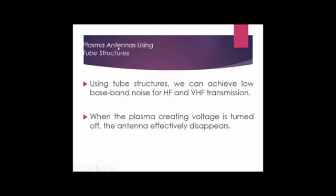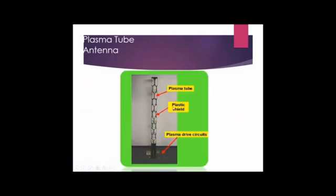Plasma antennas using tube structures can achieve low baseband noise for higher frequency and very high frequency transmission. When the plasma-creating voltage is turned off, the antenna effectively disappears. This plasma tube antenna consists of a plasma tube, a plasma sheath, and plasma drive circuits — this is how a plasma tube antenna is going to look.